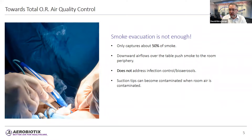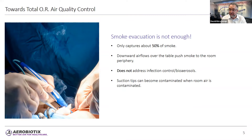Additionally, downward air flows over the table from directional flow systems push smoke downwards and outwards into the room periphery, where many people are located. Routine smoke evacuation also does not address infection control or bioaerosols arising from aerosol-generating procedures or from room occupants. Finally, suction tips can become contaminated when room air is contaminated, as suction's negative pressure can attract airborne bacteria.